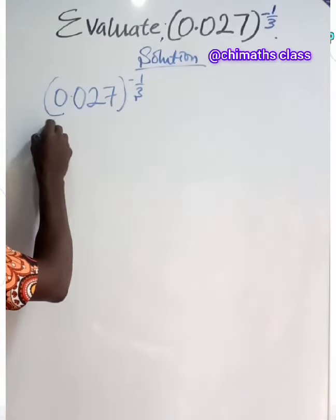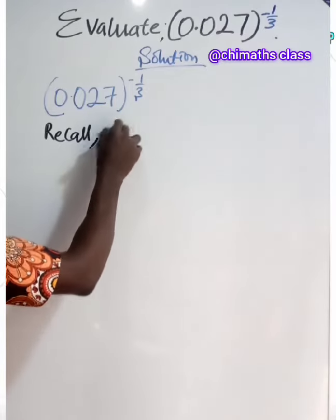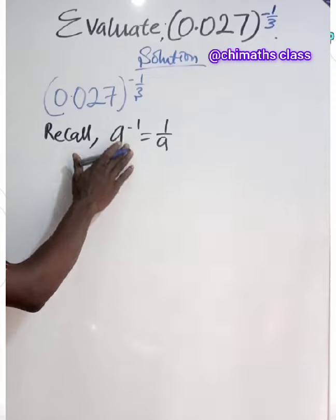Apply negative index law here. You will recall that A raised to the power minus 1 is equals to 1 over A. This is negative index.